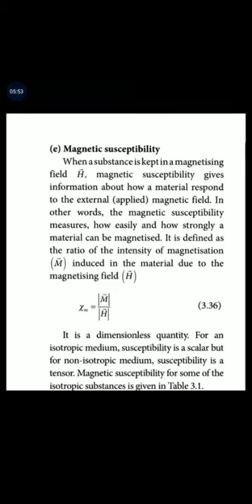Magnetic susceptibility is defined as the ratio of the intensity of magnetization induced in the material due to the magnetizing field. The ratio of the intensity of magnetization to the magnetizing field H is the magnetic susceptibility.